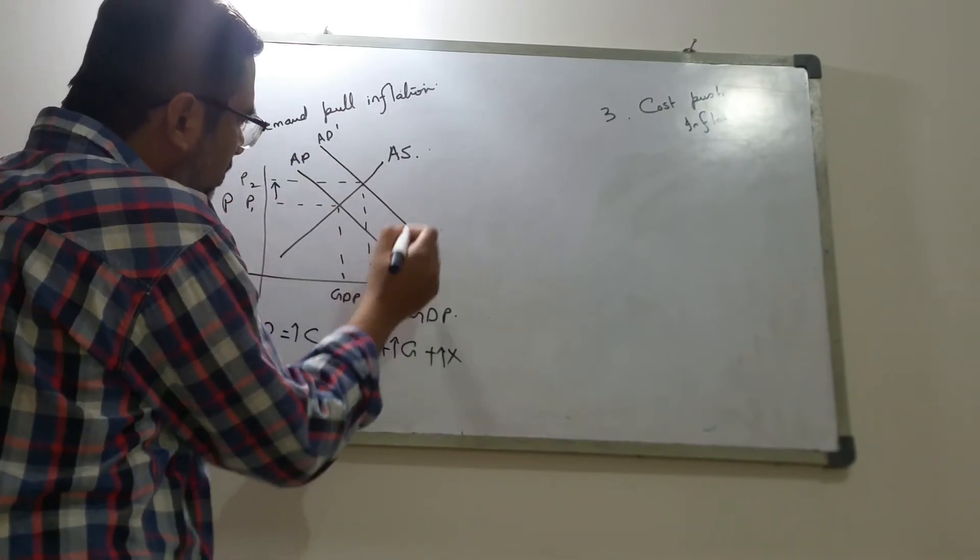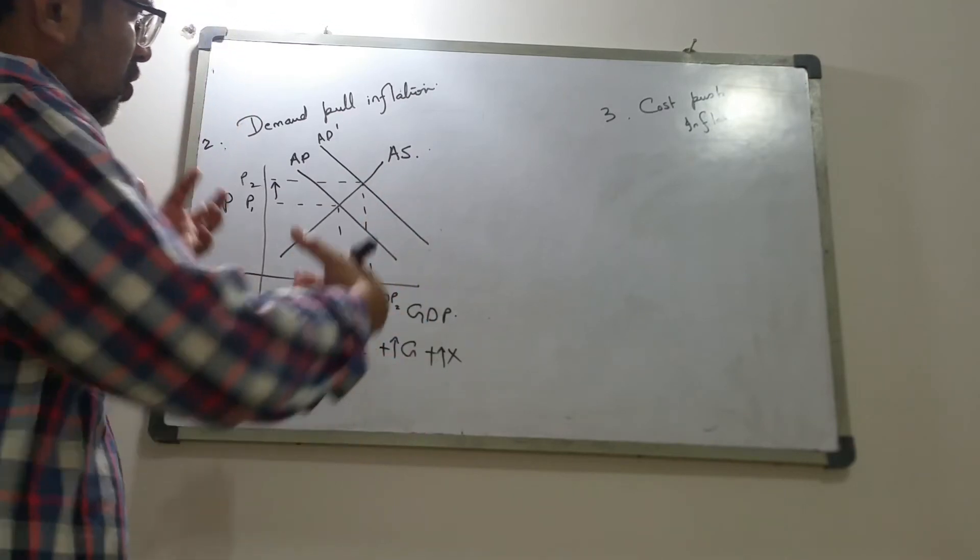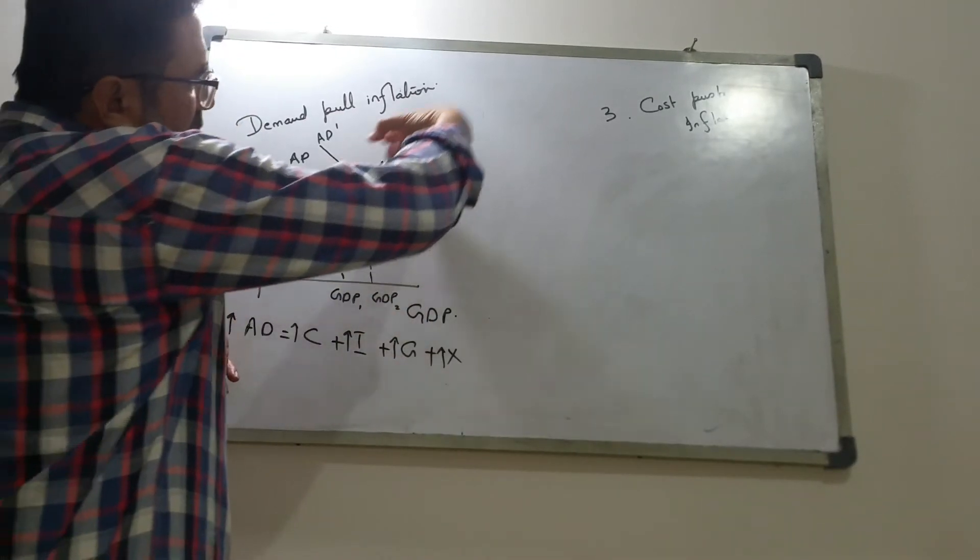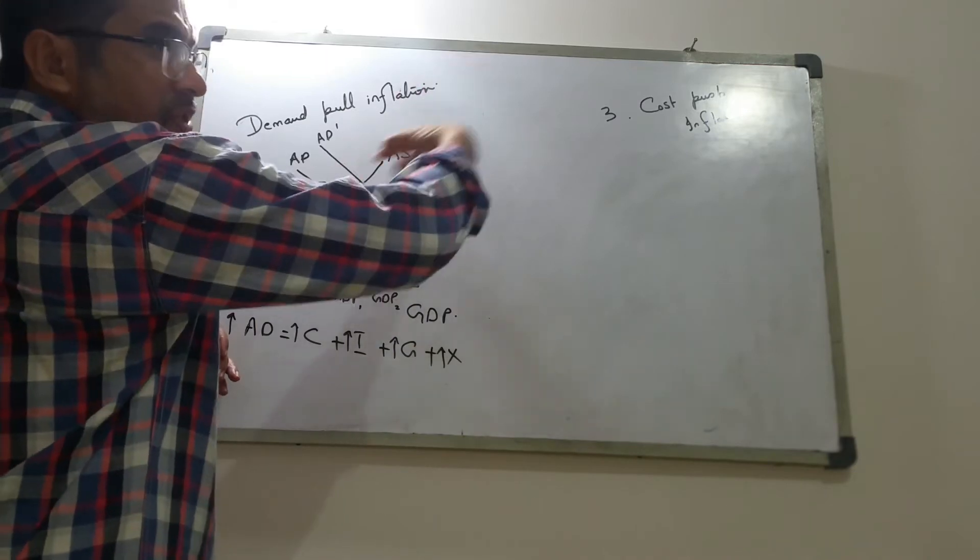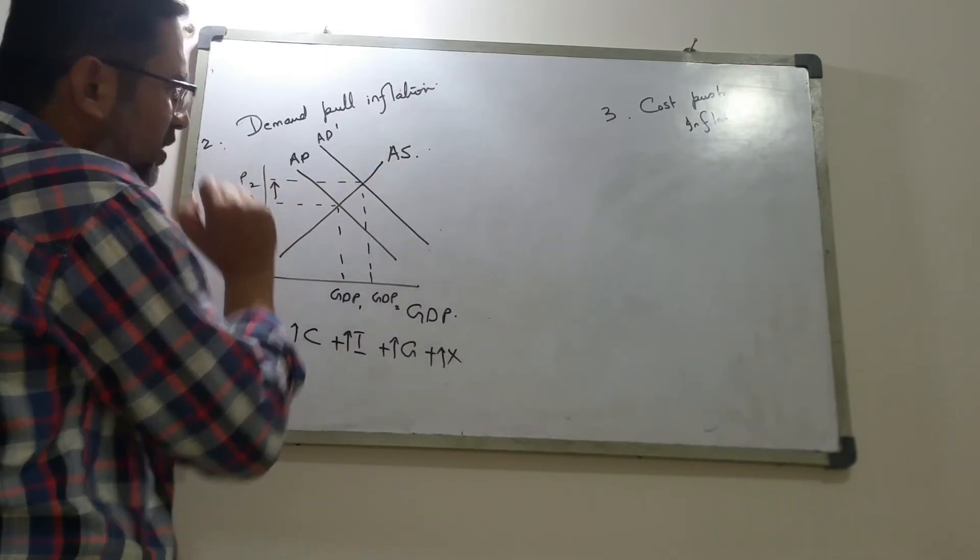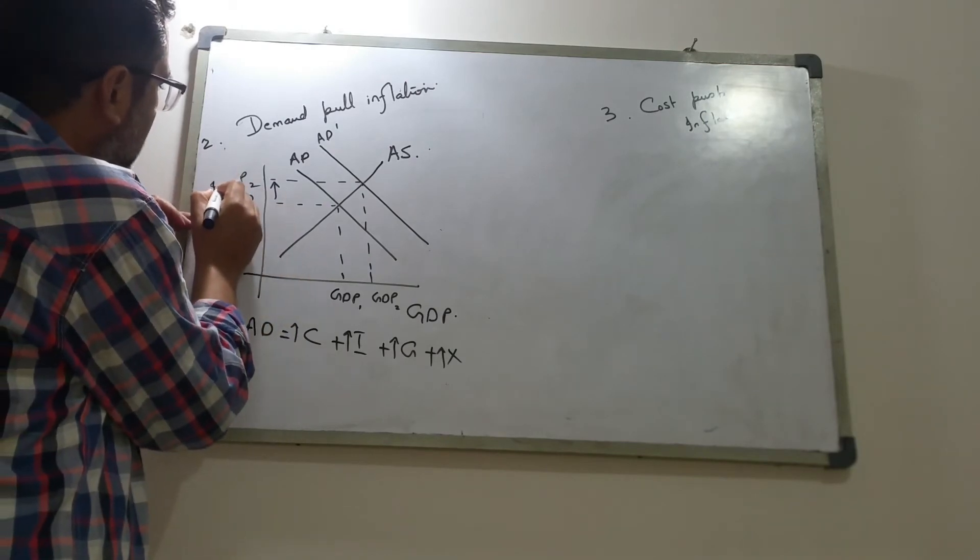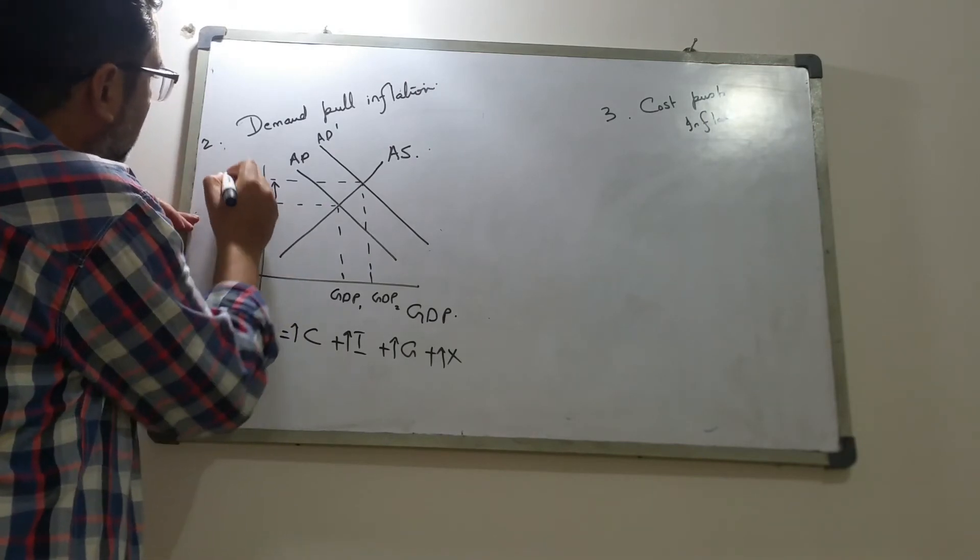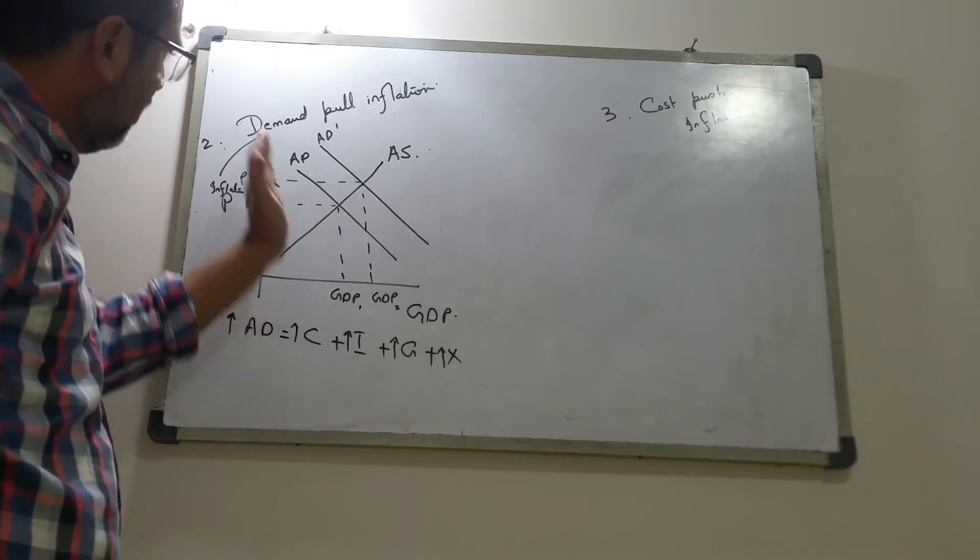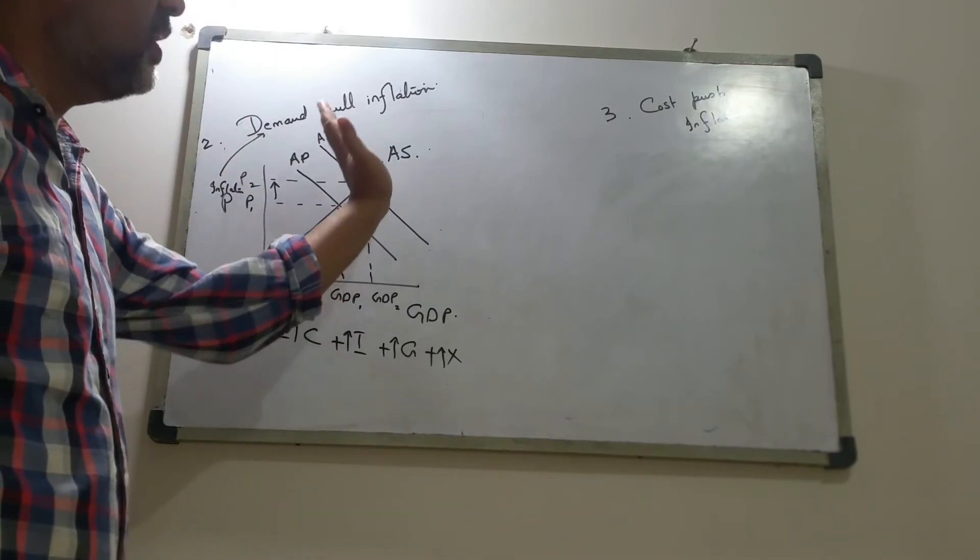So the increase in demand leads to, so this aggregate demand pulls, when it moves out it pulls the prices up to another level. And this causes inflation which we call demand-pull inflation, because this inflation is caused by the pull or the increase in demand.